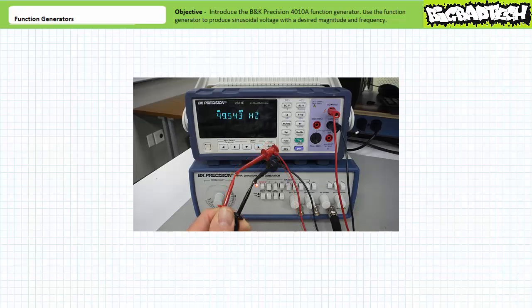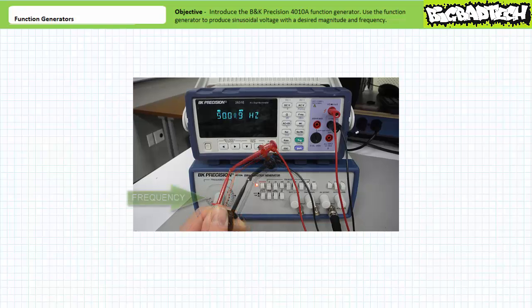Using a DMM in frequency measurement mode, it looks like we're close, but ever so slightly off our desired 50 hertz frequency. Readjusting the dial on the left, we dial it in closer to 50 hertz. In theory, we've created a waveform with an effective value of 4.5 volts, a peak value of 6.4 volts, a peak-to-peak value of 12.7 volts, a frequency of 50 hertz, and a period of 20 milliseconds.